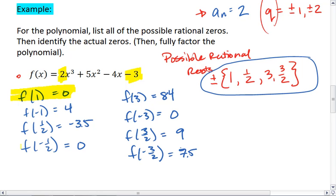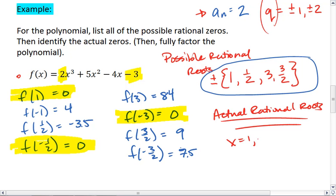Our zeros, we have 3 of them, occur when x is positive 1, negative 1/2, and negative 3. So our actual rational roots are x equals 1, negative 1/2, and negative 3.